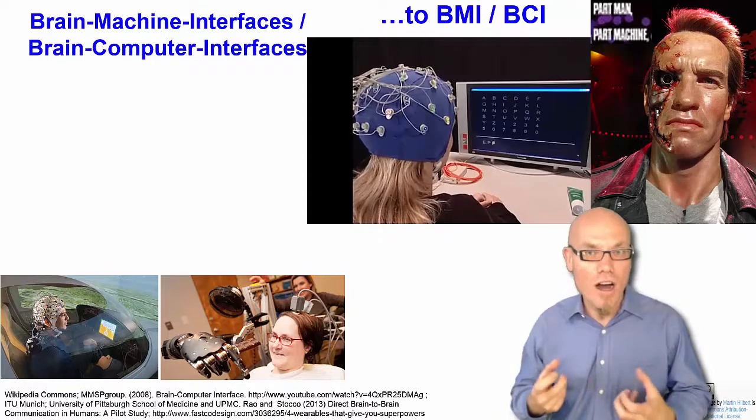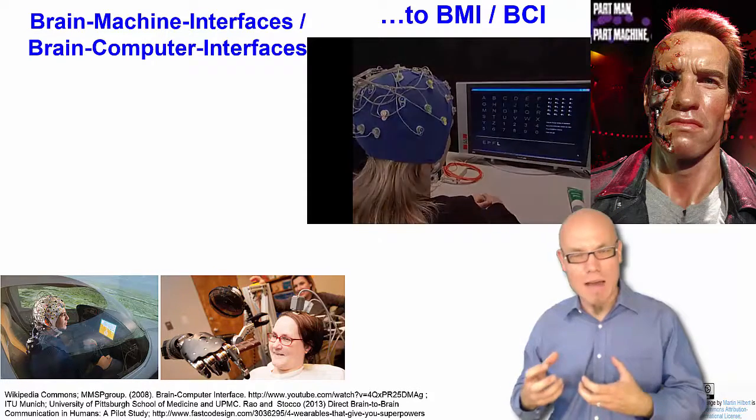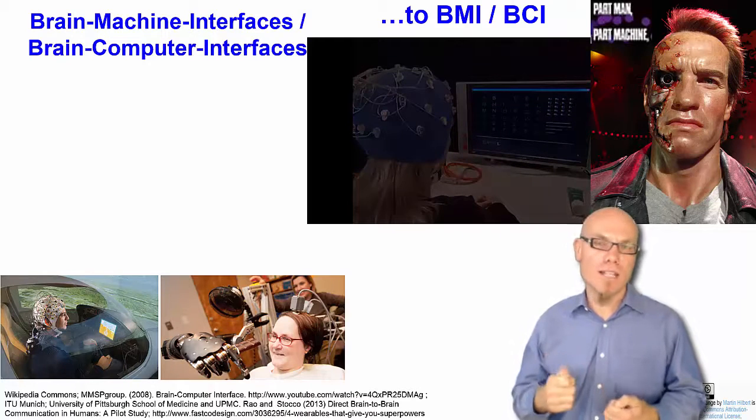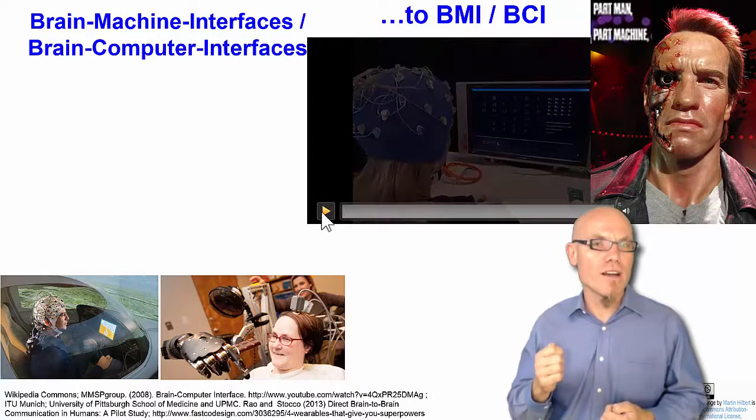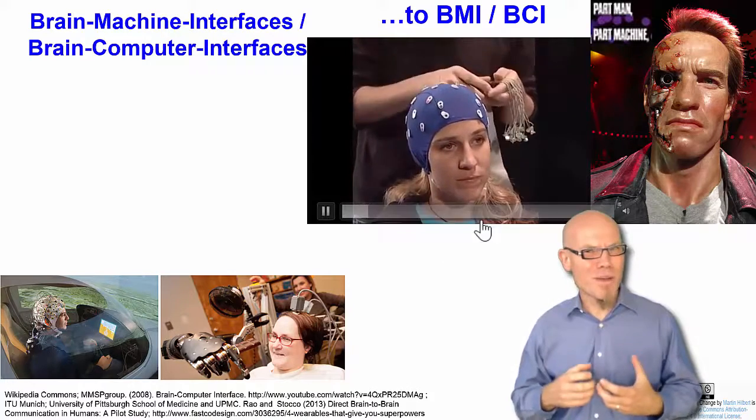And then you say something also very strong, like think about love. And you record the neural activity that happens when you think about love, and then you tell the machine, now print the letter L. And with this, you can type just by thinking.